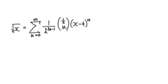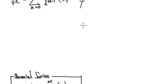Following on from the previous video, we managed to work out our Taylor series for the square root of x centered at 4. Now we need to look at the interval of convergence.